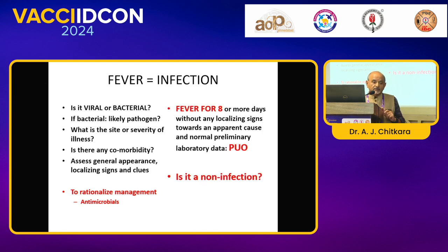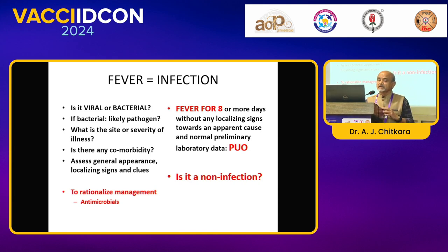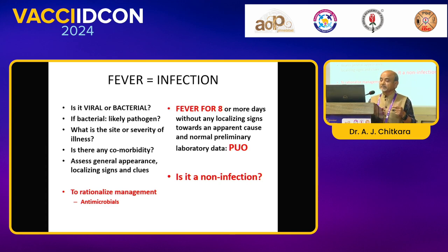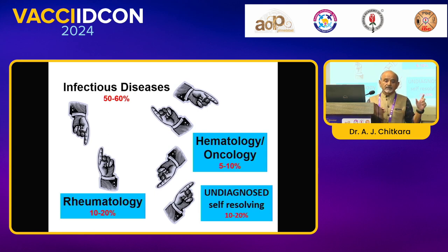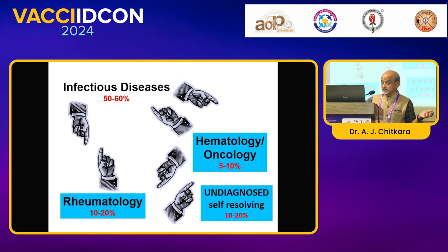The problem starts by end of the first week. You have a persisting fever, no clinical signs, and your routine workup for endemic diseases or outbreak situations reveals no clue. Then you start thinking: is it a non-infection? By that time the patient has already left you for a second opinion. Meanwhile, a similar patient unhappy with their earlier doctor comes back to you. While we concentrate on the 50–60% of infections, there is a sizable chunk that presents as fever but is non-infectious — rheumatological disorders, hemato-oncology, and sometimes undiagnosed.